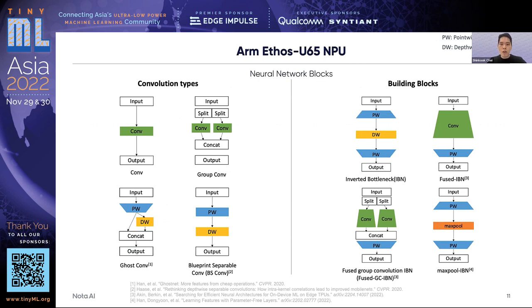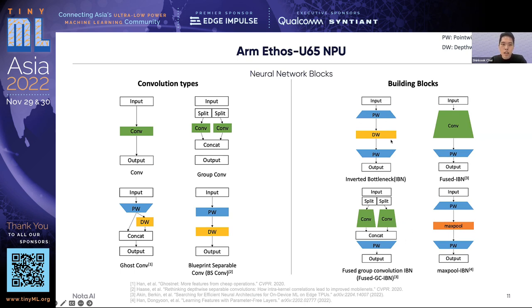For a better examination of Ethos U65's characteristics, we ran experiments with several convolution types and building blocks. For convolution, various types such as group convolution, ghost convolution, and blueprint separate convolution were adopted, which are variants of the standard convolution layer. On the block level, we employed fused IBN, fused group convolution IBN, and max pool IBN. Fused IBN and fused group convolution IBN are blocks that replace both point-wise convolution and depth-wise convolution with standard convolution and group convolution respectively. Max pool IBN is a variant of IBN that replaces depth-wise convolution with max pool.